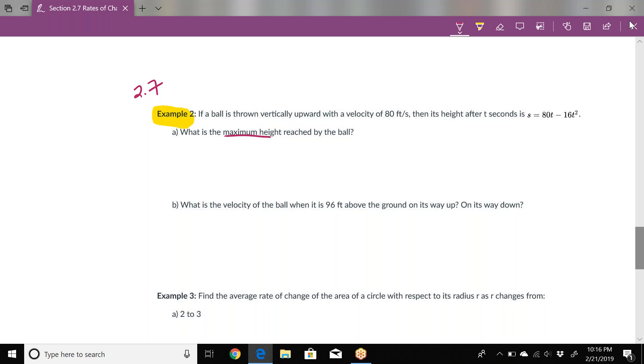The first question is: what is the maximum height reached by the ball? That would happen when the velocity function, or first derivative, equals zero, because that's where we would have a max or min. Finding the velocity function is taking the first derivative, which is 80 - 32t.